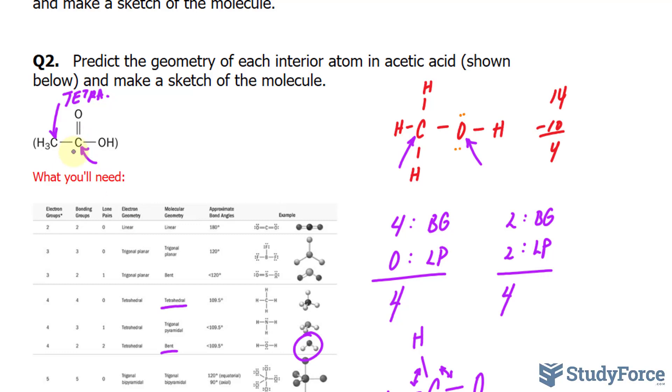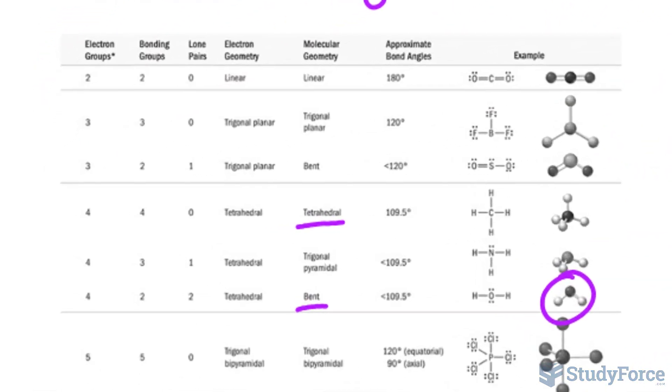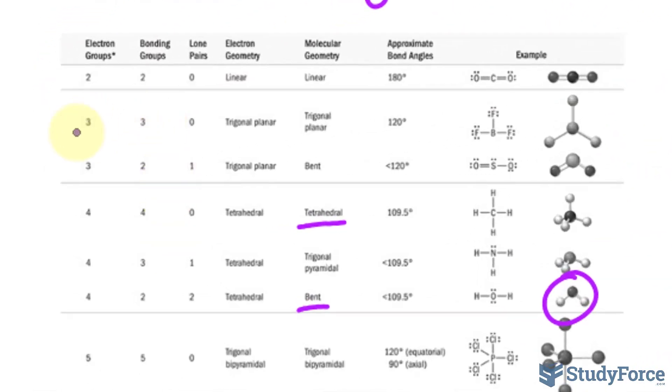What about this carbon? Well, we'll analyze it. It has one, two, three bonding groups, and it has zero lone pairs. Adding this up, we end up with three electron groups. Let's use this chart. If you focus in on this row.